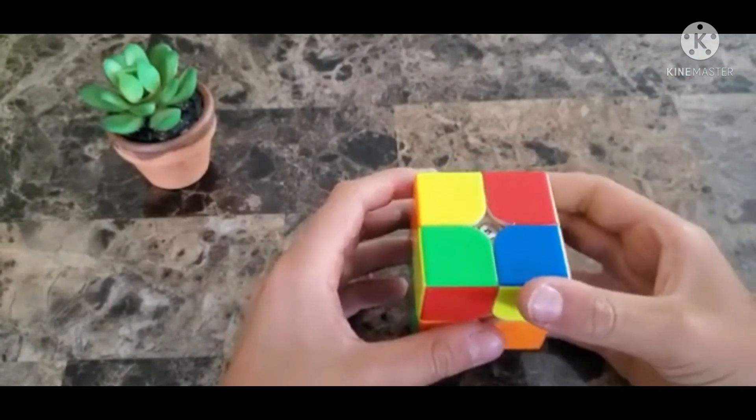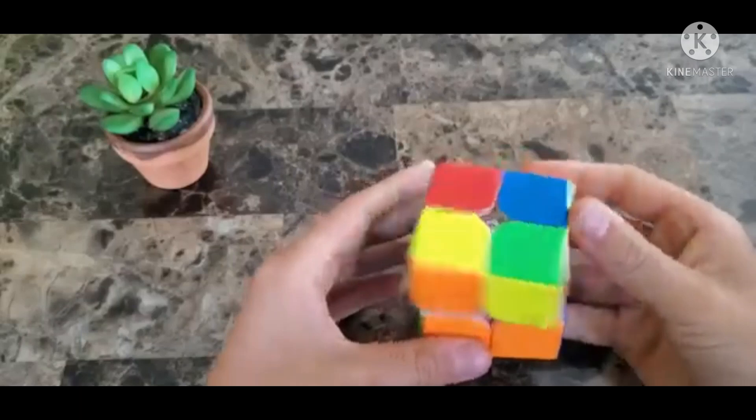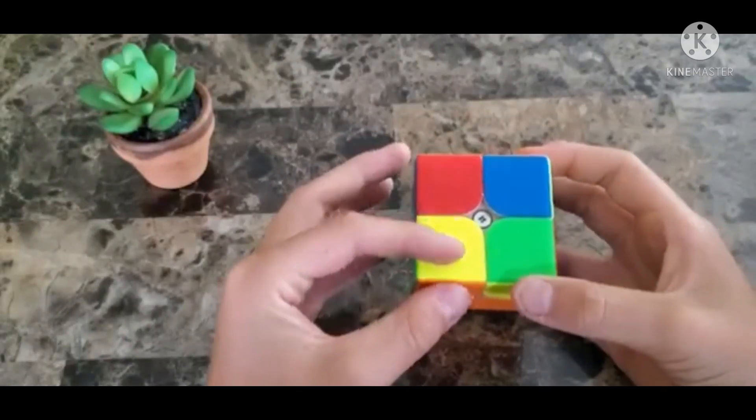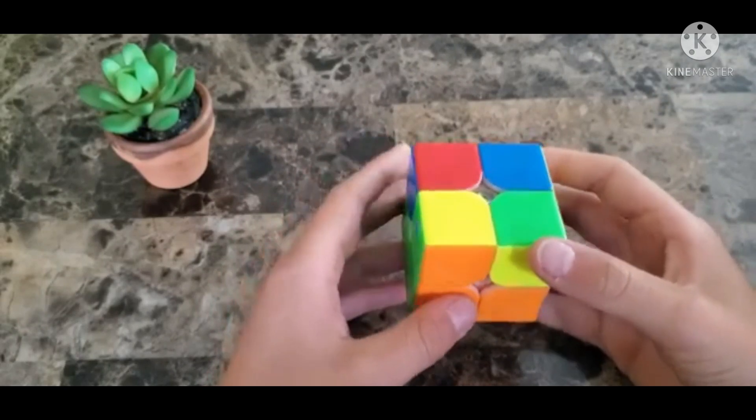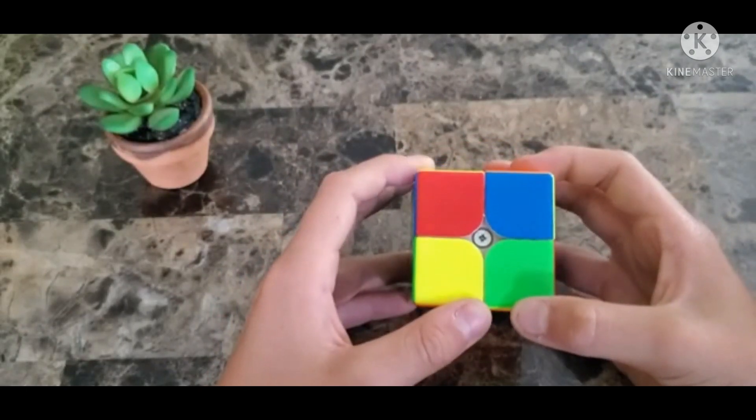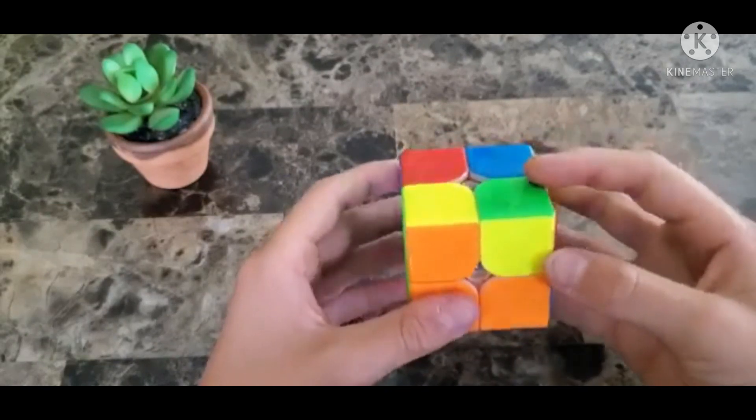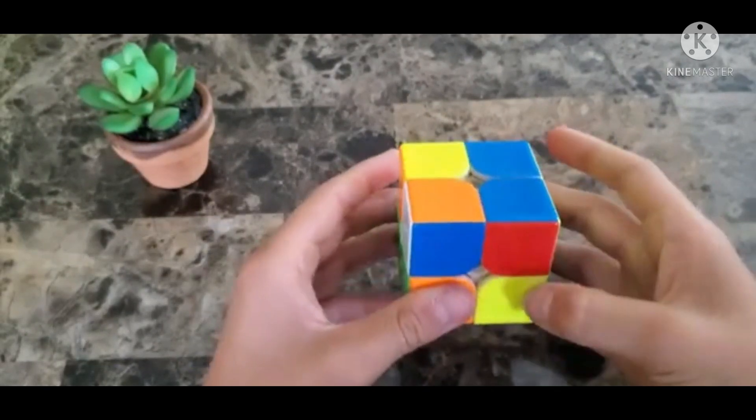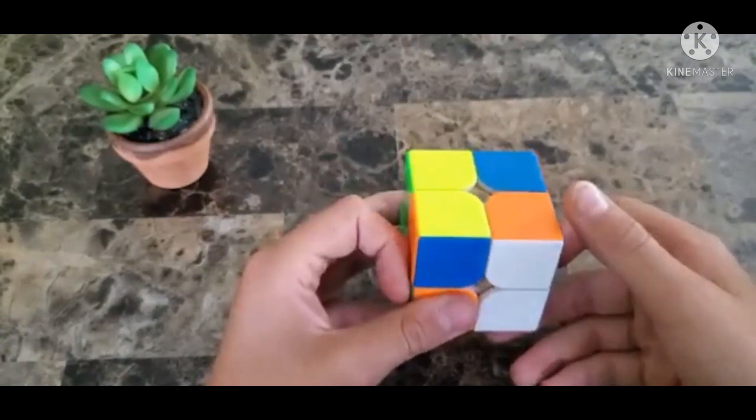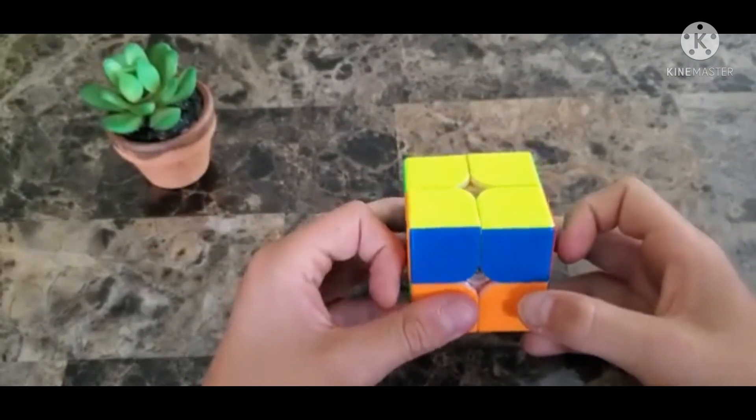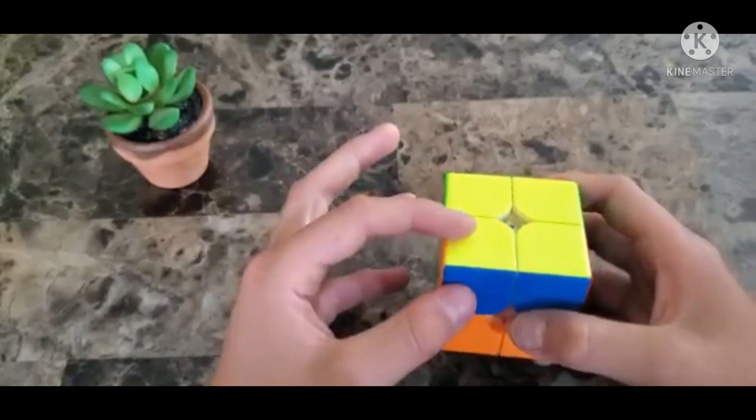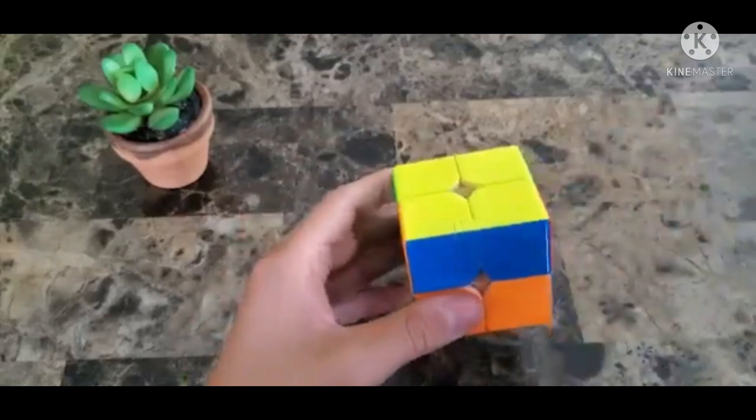So I'm gonna be going into the other cases later but first I'm just gonna solve this case. So when you have just the one yellow piece on the top you're gonna want to hold it in this position, always in the left bottom corner and do this move. That solved it actually right there but if it didn't you're just gonna want to put it in the same spot again and do the algorithm again.